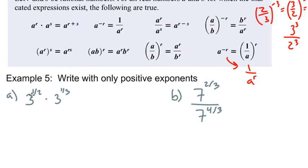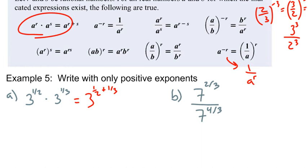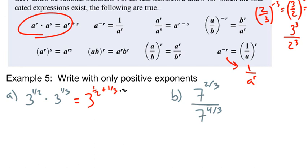Okay, so this is just using our first rule right here. So if I have a common base three, what do I do with one half and one third? Well, I'm going to add them — so I'm going to do one half plus one third. You've got to get a common denominator. My common denominator of two and three is six, so I multiply this side top and bottom by two, and multiply this top and bottom by three. Three plus two is five on top and we have a common denominator of six. The directions say to write with only positive exponents — five and six are positive — we are done.